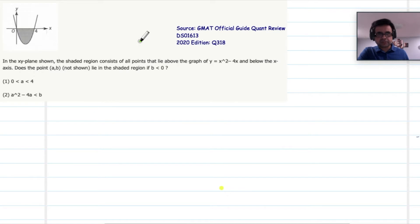Let's get started trying to understand what the question gives us and what kind of inferences we can draw from the question itself. So we are given an xy plane that much is straightforward. There is a shaded region and it consists of all points that lie above the graph of a curve.